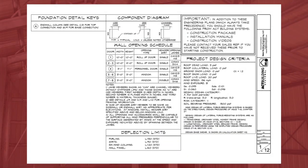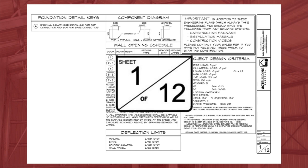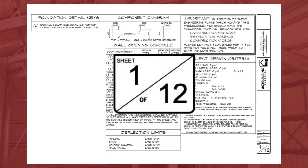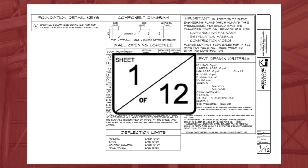If you look at the bottom right-hand corner of each page, you'll see two numbers in a box. The bottom number is the total number of pages, and the number above is the current page. This tells anyone reviewing the plans how many pages they should have and what page they are currently looking at. In the case of our example, we're looking at page 1 of 12.